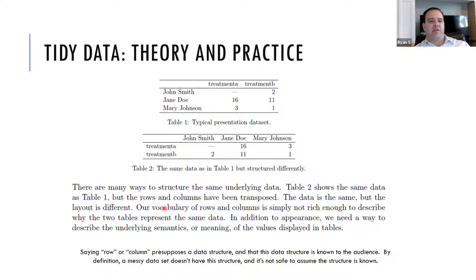And so the data is the same, but the layout is different. And it goes on to say that our vocabulary of rows and columns is simply not rich enough to describe why the two tables represent the same data. In addition to appearance, we need a way to describe the underlying semantics or meaning of the values displayed in tables. And I thought that was an interesting way to put it because if we know about this data and we just say something is in a row or we just say a certain value is in a column, that's meaningless really because you can present the same data in both ways.